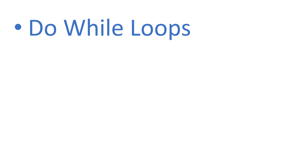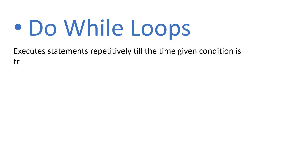Let's have a look at the definition. It says: executes the statements repetitively till the time the given condition is true. Meaning, if you are running a DO WHILE loop based on a condition, till the time that condition is true, the DO WHILE loop will continue the iteration. The moment the condition becomes false, the DO WHILE loop terminates.